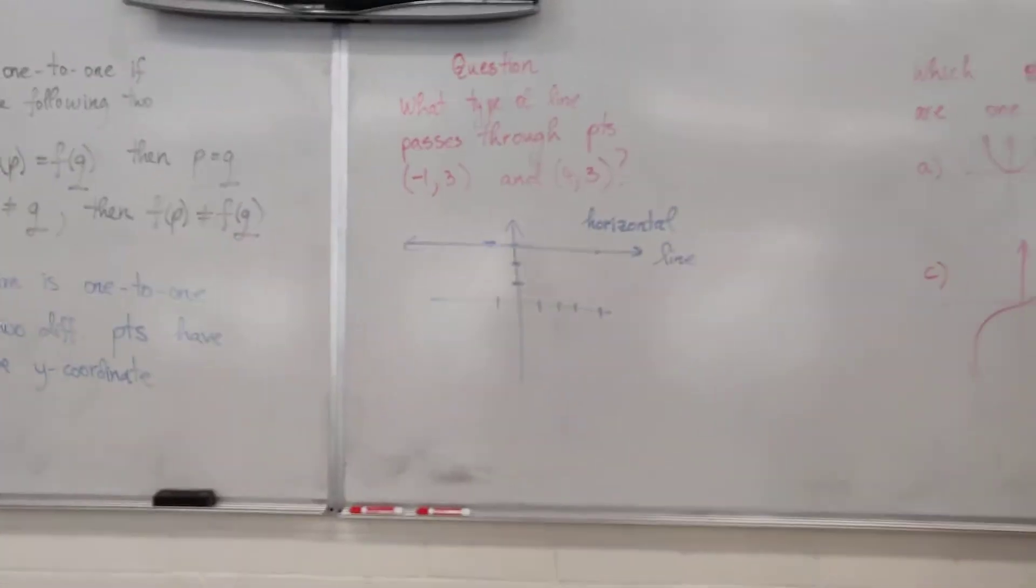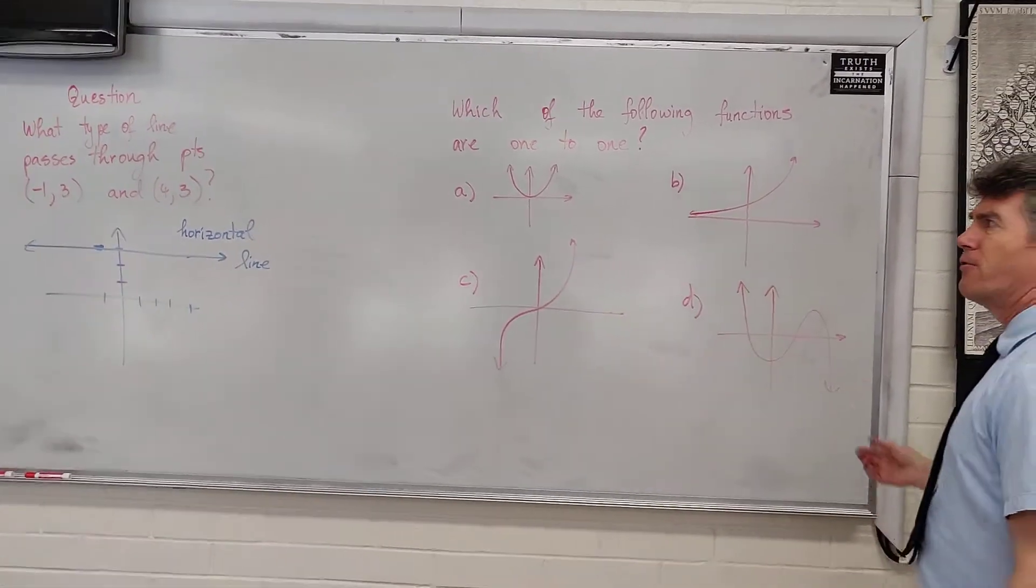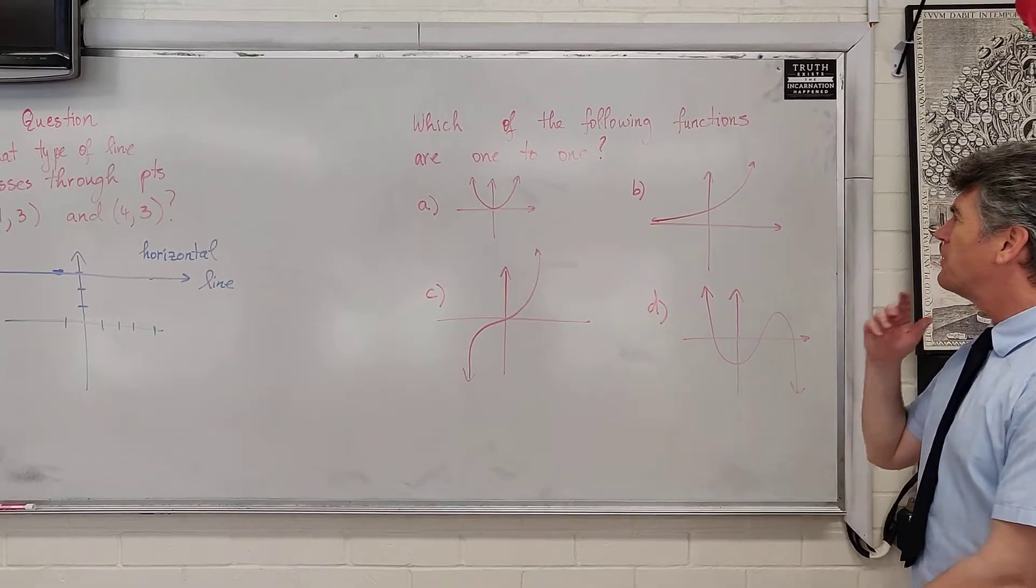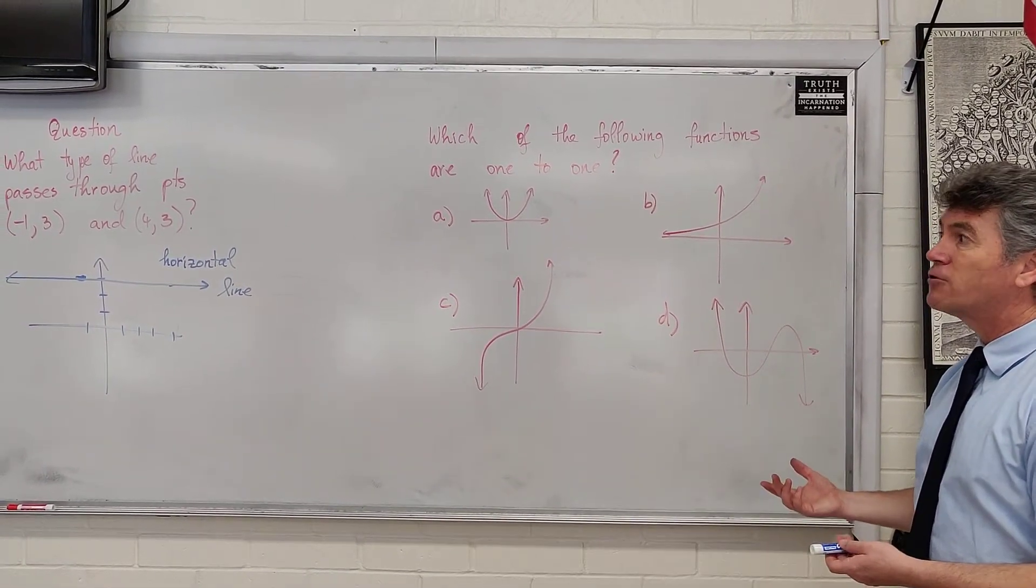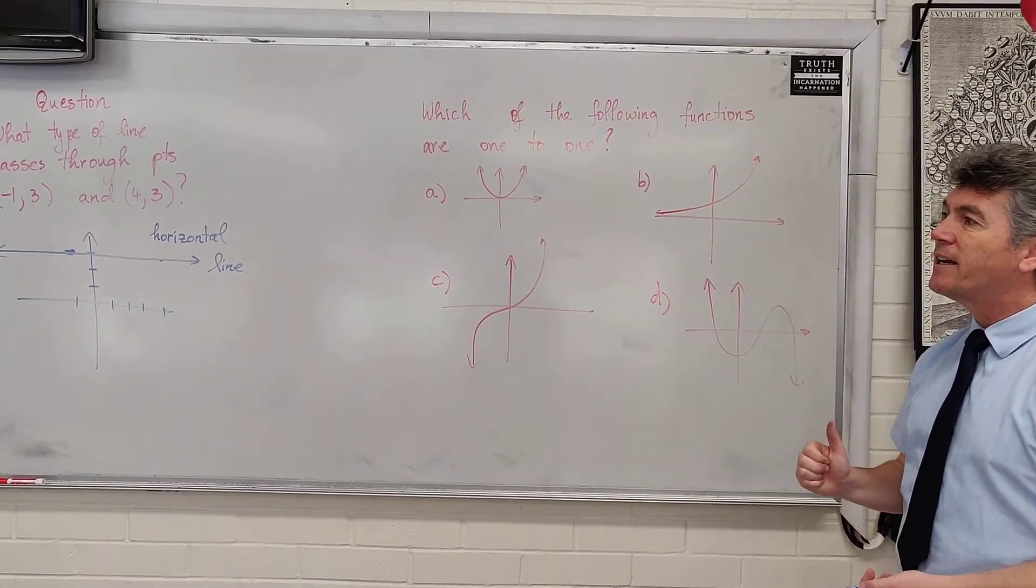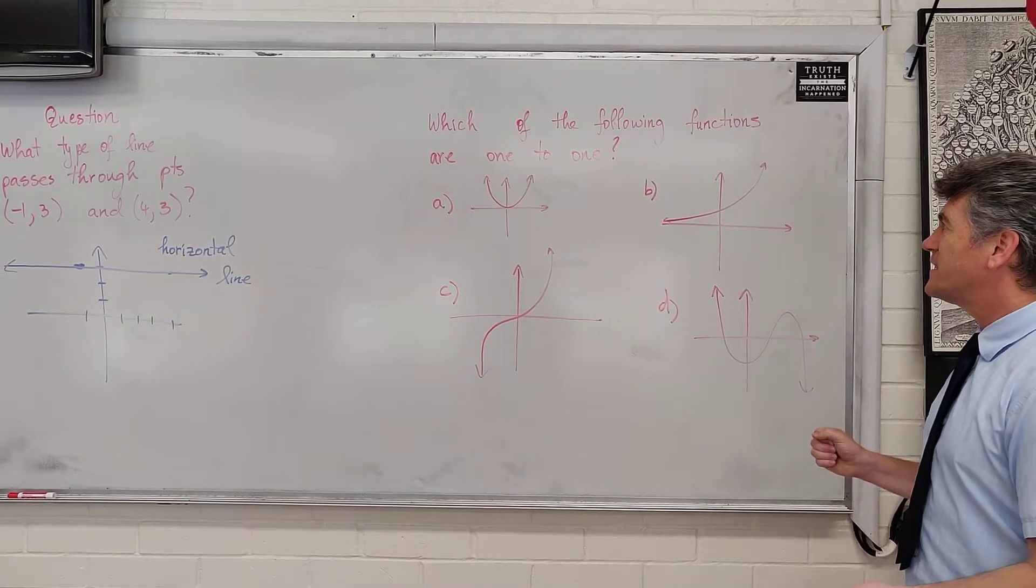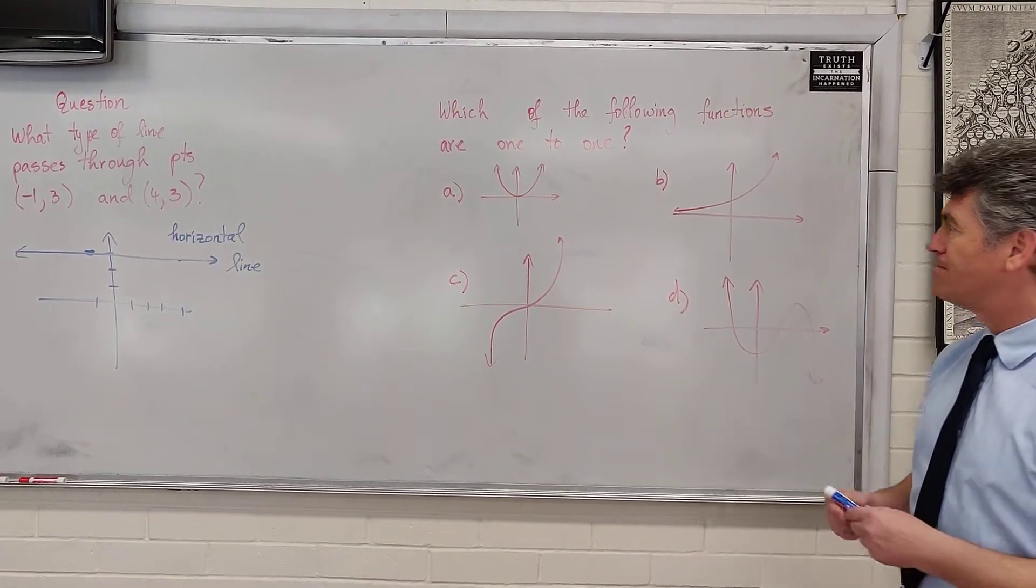For the horizontal line test, I drew four graphs on the board. You should stop the video right now. Even if you don't know what you're doing, just take a look at the graphs and think, which function is one-to-one or not one-to-one? Look at the definition again, and then just guess. Start the video and see if you're right or not.